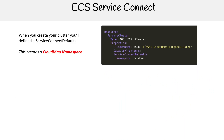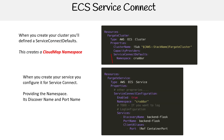When you create your cluster, you define a Service Connect default. What that's doing is creating a Cloud Map namespace. If we go over to the Cloud Map service, we'll see that there.